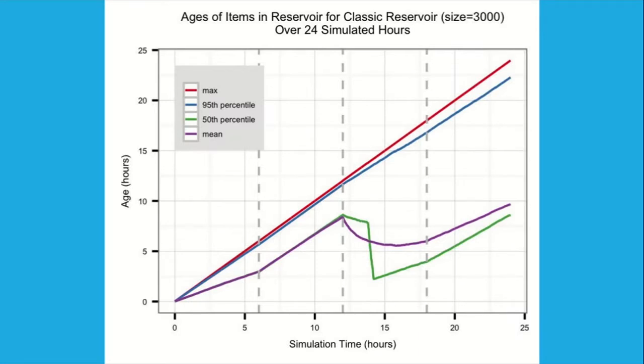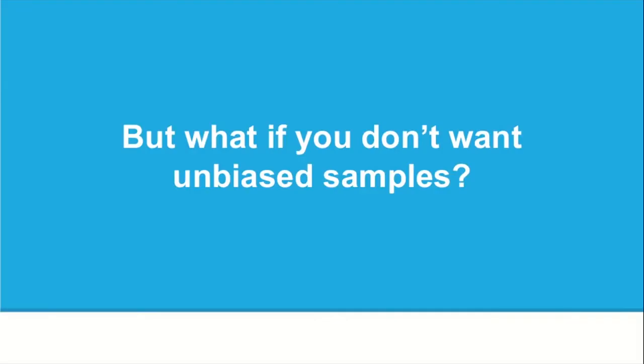The 95th percentile is also increasing pretty close to linearly. Around the time we switch from one event per second to 30 events per second, the green line — which is the median — and purple — which is the mean — get dropped because a lot of older events are being removed. The oldest events are increasing linearly with time. This is sampling from the beginning of time, which may or may not be what we want.